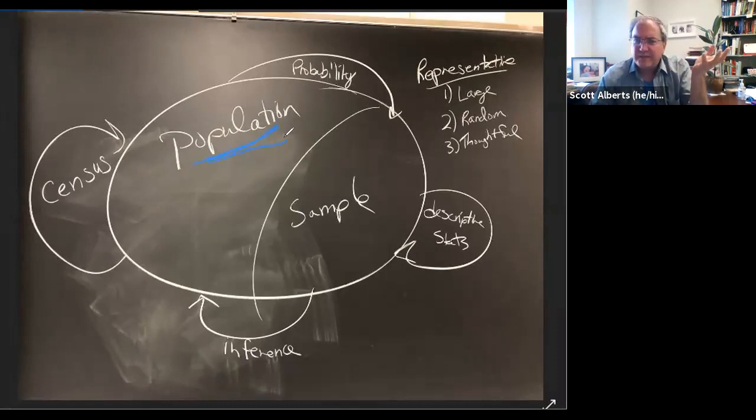But for now, the idea that there's just a whole bunch of things. And normally we think of that as people, but sometimes it's products we make at the assembly line or mice in our study or not mice in our study, mice in general. And we're going to take a subset of that population and call that a sample.